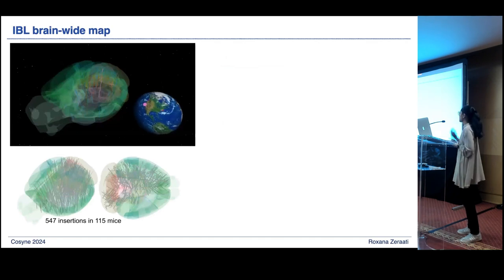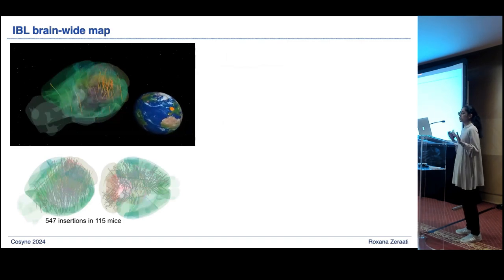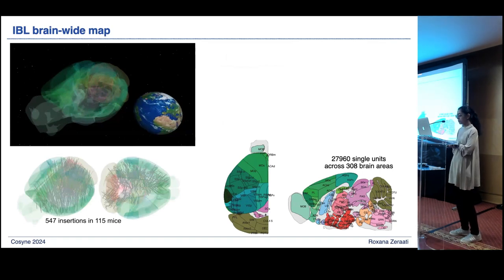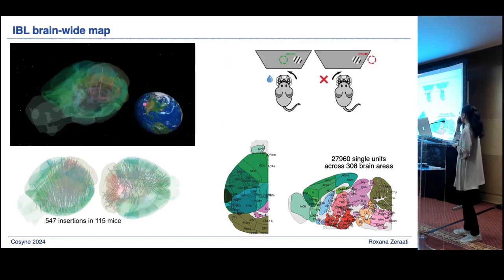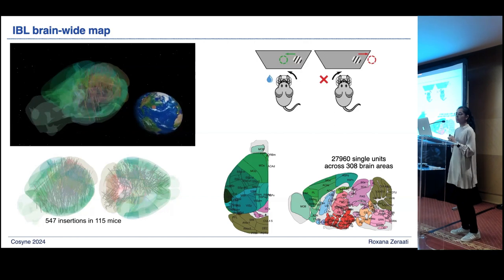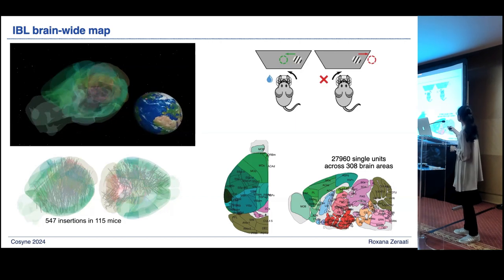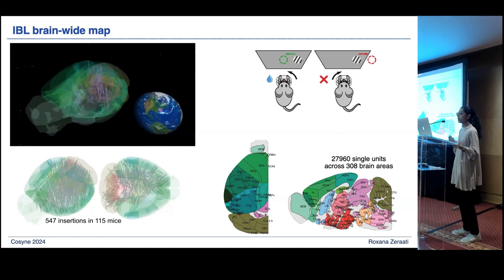For this, we are using the International Brain Laboratory Brain-Wide Map — data collected and analyzed across 22 computational and experimental labs using Neuropixels probes. This data covers a wide range of brain areas; we have more than 27,000 single units distributed across 308 brain areas. The data is recorded during a version of a two-alternative forced-choice decision-making task. During this task, the mouse holds a wheel and needs to move it to bring a stimulus to the center of the screen.